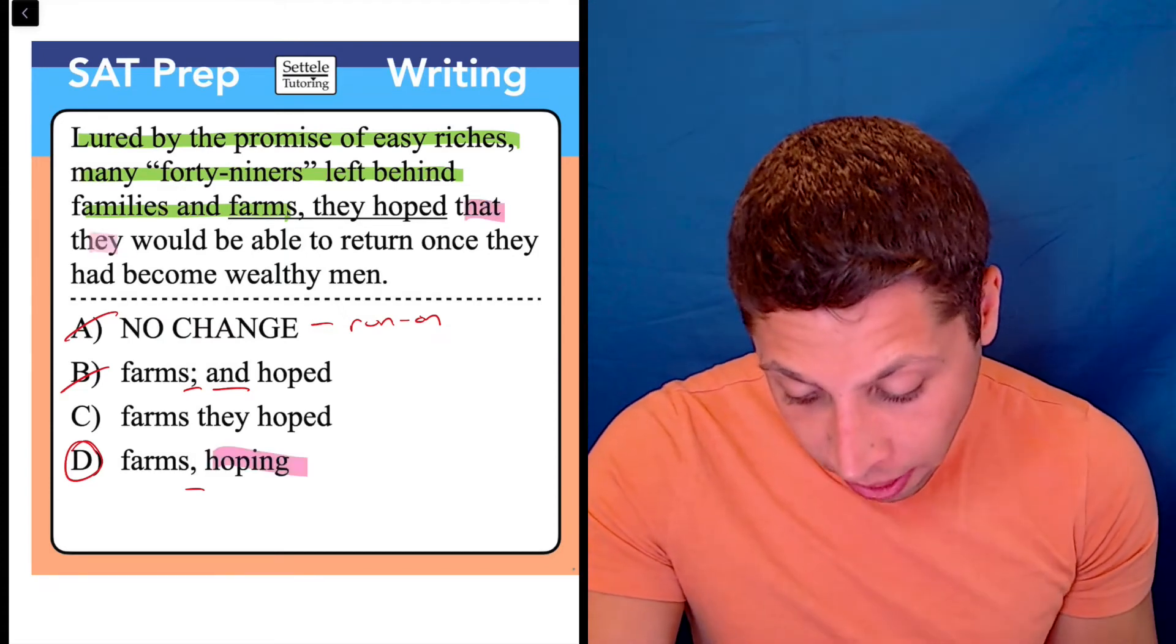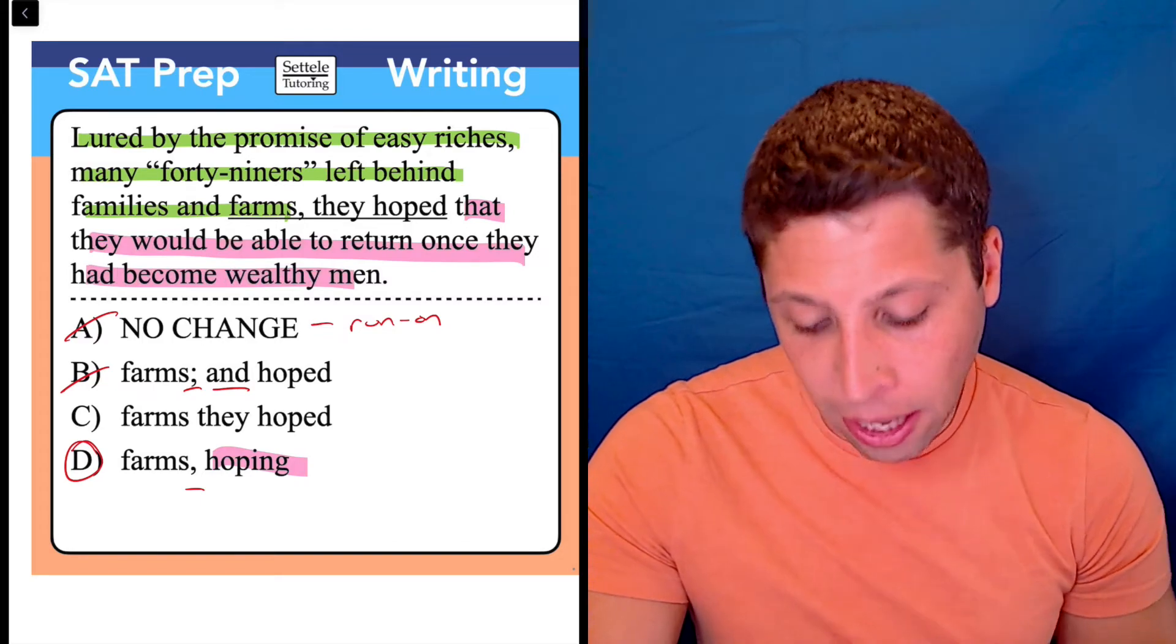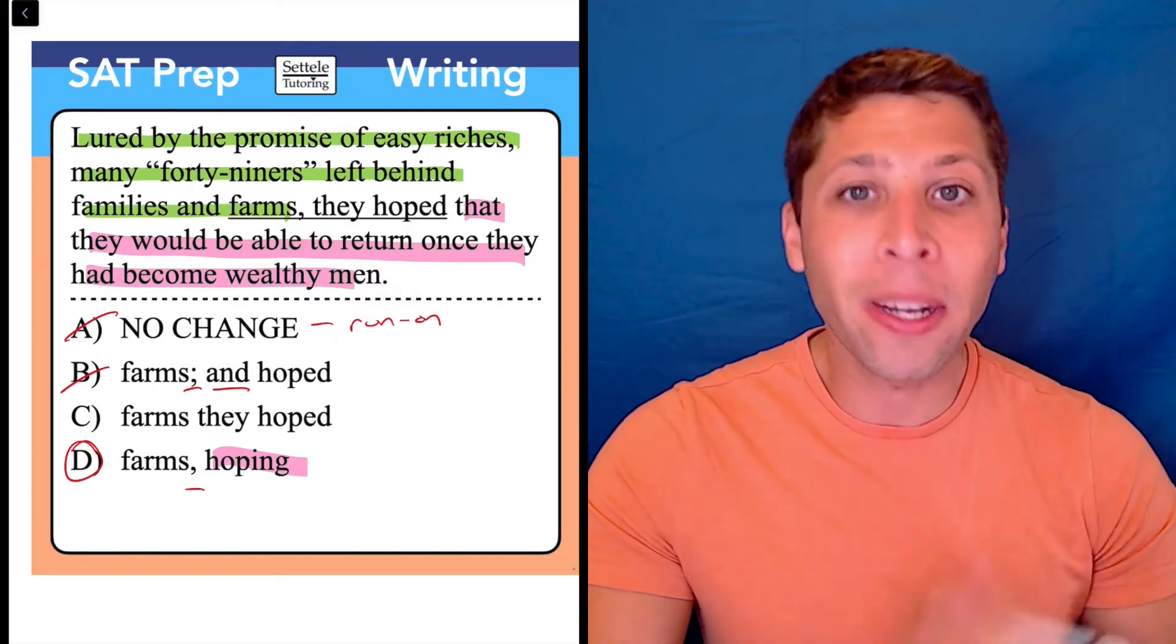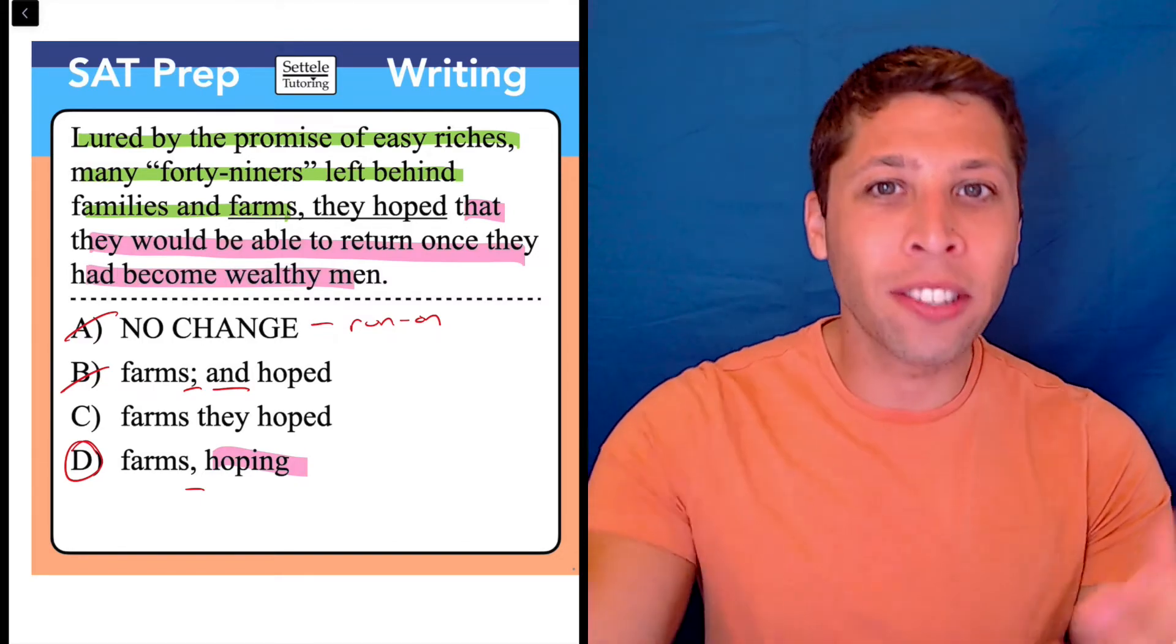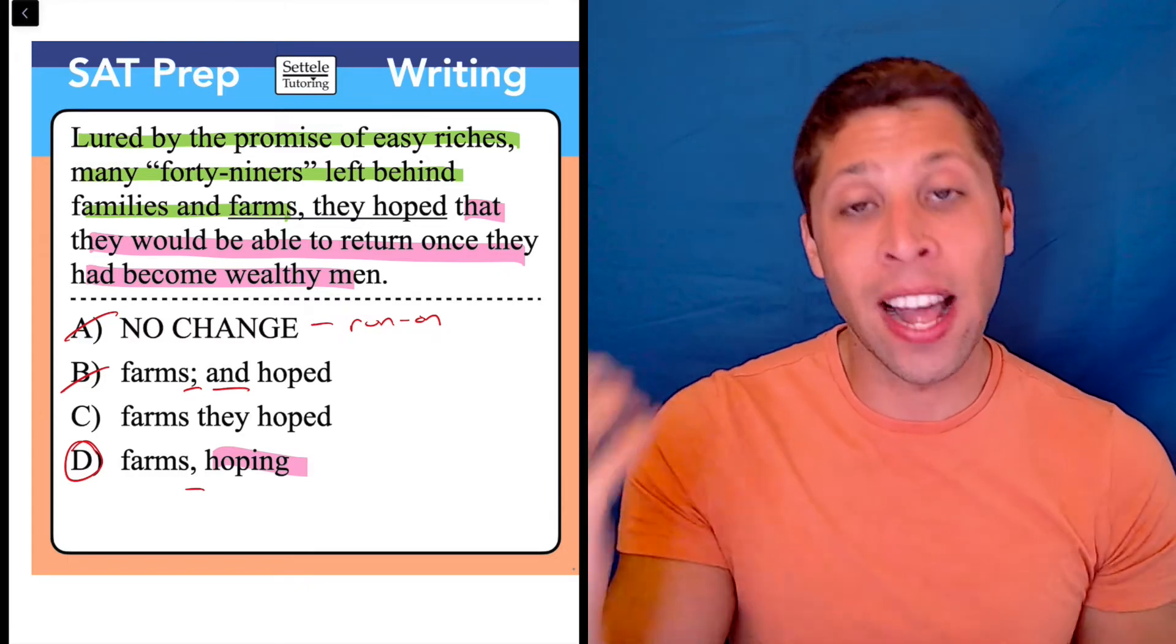hoping that they would be able to return once they had become wealthy men. It's long, but it's not itself a sentence. It requires an attachment to an actual sentence. And that's what the comma is doing here.